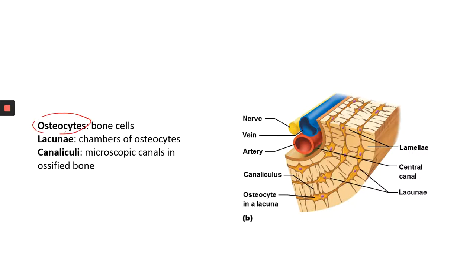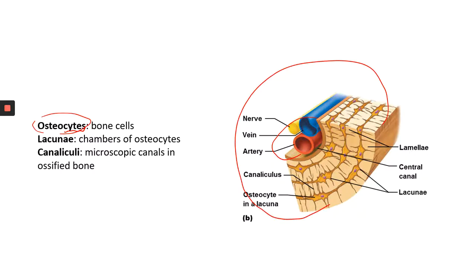Osteocytes — every time you see '-cytes,' that probably indicates some kind of cell. Osteocytes are bone cells, and you can find them pretty easily. When you look at the compact bone, within each osteon, in between two lamellae layers, you see a darker line. Each has a spider-like structure, and you can actually see a cell nucleus there — that is one osteocyte.